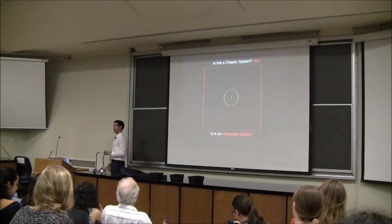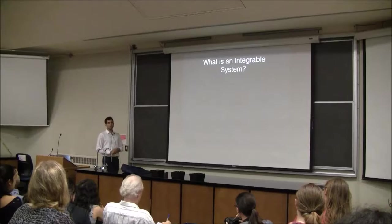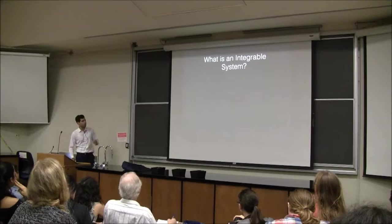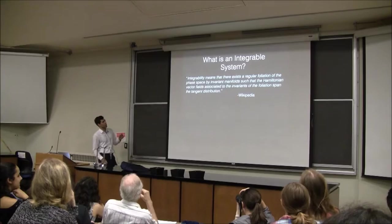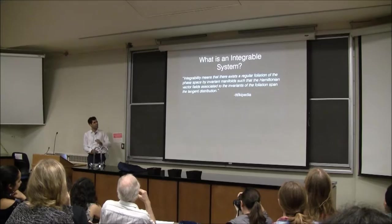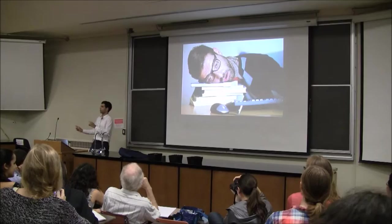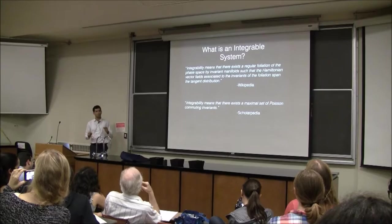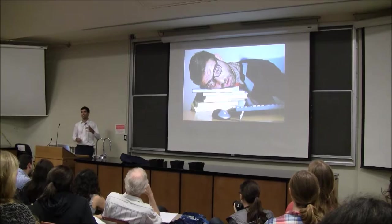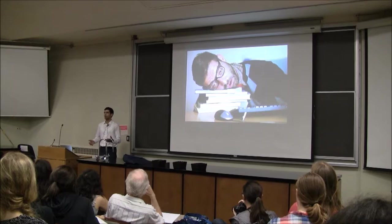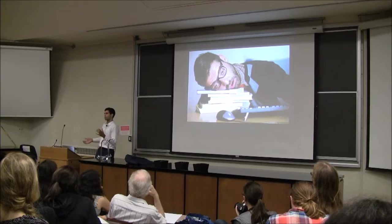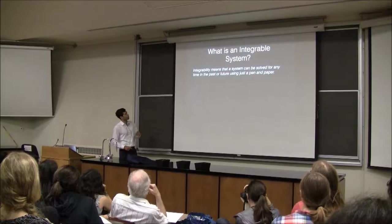What's an integrable system? I looked around on the internet, including Wikipedia — 'integrability means that there exists a regular foliation of the phase space by invariant manifolds such that the Hamiltonian vector fields associated with the invariance of the foliation span the tangent distribution.' That's not going to work. Scholarpedia says 'integrability means there exists a maximal set of Poisson community invariants.' That's also not quite going to work. I couldn't find a good definition, so I had to come up with my own.